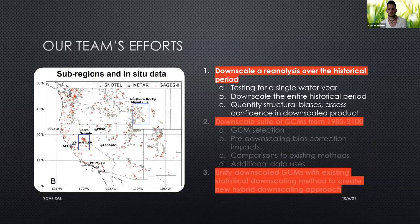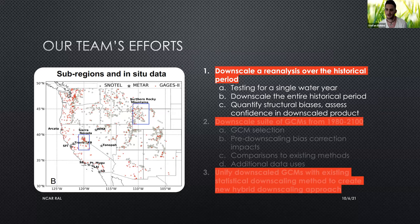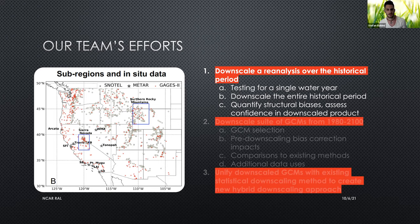For the remainder of this talk, let's get into some results, broken up into two sections. First, we downscale a reanalysis over the historical period. In that, we conduct tests for a single water year to determine an optimal set of physics and grid options within WRF, then use those choices to inform our physics as we downscale the entire historical period. We do this to quantify biases and assess the fidelity of the downscaled product. We compare to observations for precipitation and SWE, compare to snow telemetry for streamflow, and also consider sub-regions across the northern Rocky Mountains and the Sierra Nevada, as well as some California coastal locations for temperature and 10-meter horizontal winds.